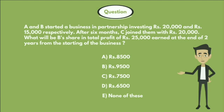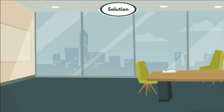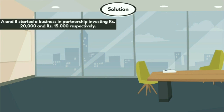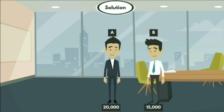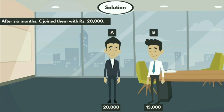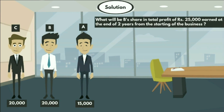And option E: none of these. Now let's see the solution. In the statement, they given that A and B started a business in partnership investing 20,000 rupees and 15,000 rupees respectively. After six months, C joined them with 20,000 rupees. The question asks what will be B's share in the total profit of 25,000 rupees earned at the end of two years from the starting of the business.